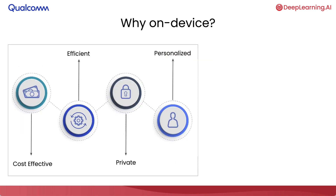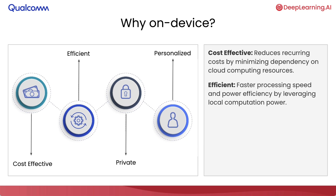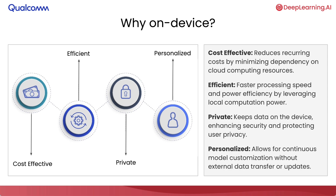Now let's look at why you would want to run models on-device. There are four main reasons. The first is that it's cost-effective, because you can utilize all the computational resources available locally without any additional cloud computing resources. The second is efficiency, because you can process data locally without needing to send it to the cloud, receive results, and process it again — making the whole process computationally much more efficient. The third is privacy, because your data will remain on your device and never leave it. And that ties into the fourth reason, personalization, because having models customized locally on your device without any external data can create uniquely personalized experiences.